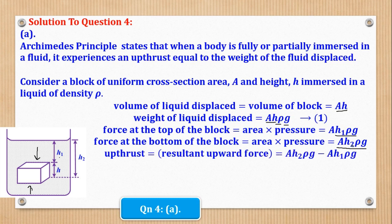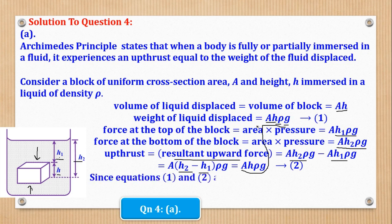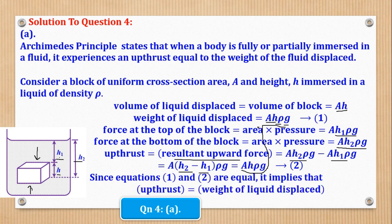From there we shall get the upthrust. Upthrust equals the resultant upward force, which is the force at the bottom of the block minus the force at the top. So A·H2·rho·g minus A·H1·rho·g gives the resultant upward force. When we simplify, we get A·(H2 minus H1)·rho·g. Looking at the diagram, H2 minus H1 equals H, so upthrust equals A·H·rho·g.